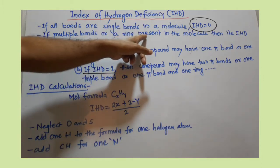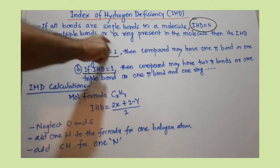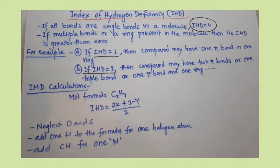From this information, we can find out the number of pi bonds present in the molecule or number of rings and pi bonds present in the molecule. This much information we gather from the index of hydrogen deficiency.